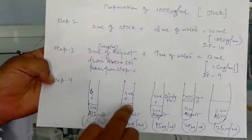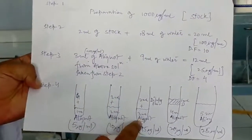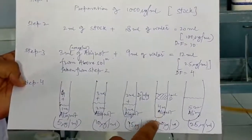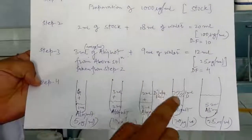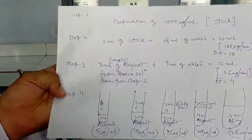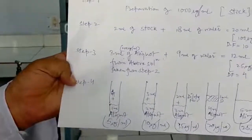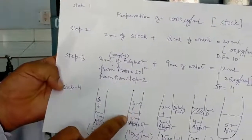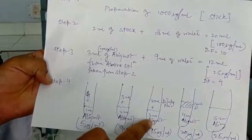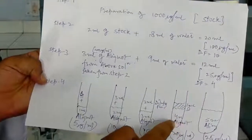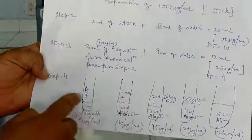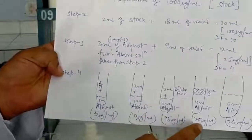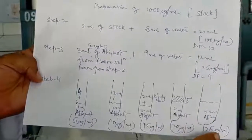Step 4 — we took 1 ml aliquot in test tube 1, 2 ml in test tube 2, 3 ml in test tube 3, 4 ml in test tube 4, and 5 ml of entire aliquot in test tube 5 without adding any diluting fluid. We added 4 ml of diluting fluid in test tube 1, 3 ml in test tube 2, 2 ml in test tube 3, 1 ml in test tube 4, and 0 ml in test tube 5. The resulting concentrations are 5, 10, 15, 20, and 25 microgram per ml.